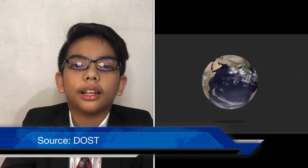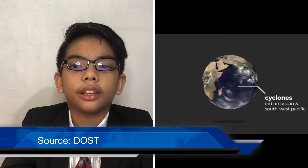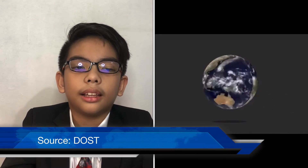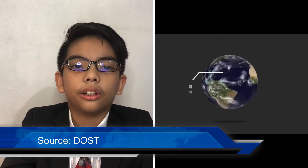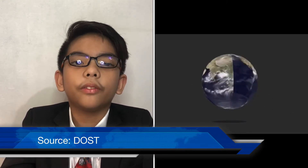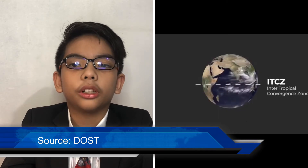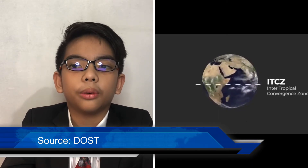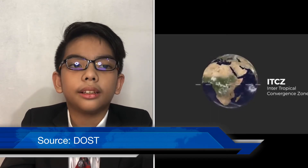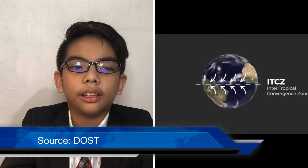In the Indian Ocean and the Southwest Pacific, they are called cyclones. In the Atlantic, they are called hurricanes. They are often found to form within the Intertropical Convergence Zone, or ITCZ, where the Northeast and the Southeast trade winds meet.